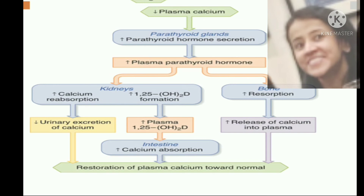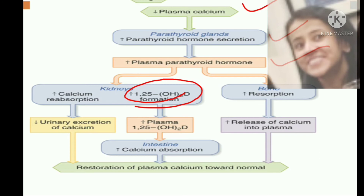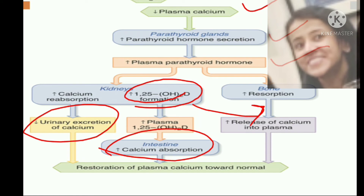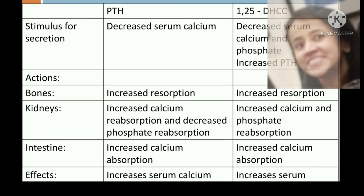In summary, when plasma calcium level decreases, there is an increase in parathyroid hormone secretion. Parathyroid hormone acts on the kidney and increases conversion of 25-hydroxycholecalciferol into 1,25-dihydroxycholecalciferol — the active form of vitamin D. Vitamin D then increases plasma calcium level by increasing bone resorption, increasing calcium absorption from the intestine, and decreasing urinary excretion of calcium.